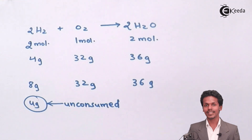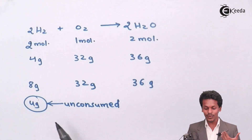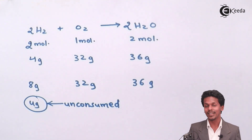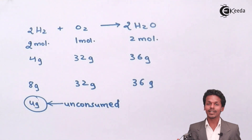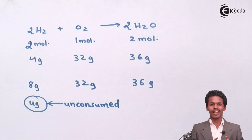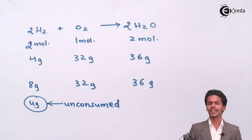So the 4 grams of unconsumed H₂ makes hydrogen the excess reagent, while oxygen, present in sufficient quantity (32 grams), becomes the limiting reagent. We obtain 36 grams of water and 4 grams of unreacted hydrogen. This is what limiting reagent and excess reagent mean.